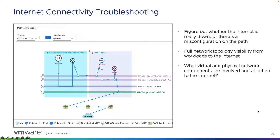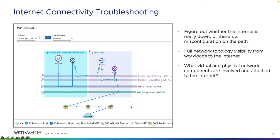We can also map out internet connectivity — basically allowing us to determine if the internet is down, if we have a misconfigured path, or if we can reach the internet. I can select a specific source virtual machine or IP address, then select the destination of internet. Here I can see my source virtual machine utilizing the distributed firewall, the NSX-T overlay, and then getting routed out through the underlying infrastructure through multiple hops before it actually reaches the internet. I can also see there's an issue on a specific underlay device, which I can click into to see if that issue is impacting internet access.